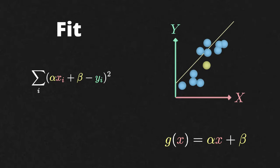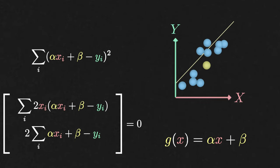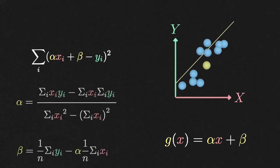To find the alpha and beta that make this quantity as small as possible, let's take the gradient, set it to zero, and solve for alpha and beta.